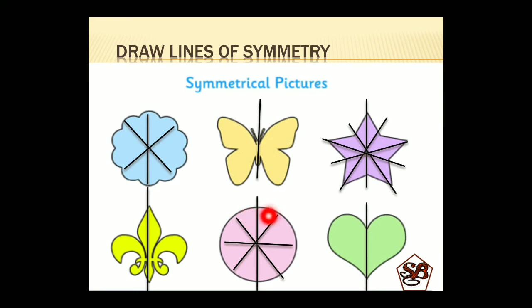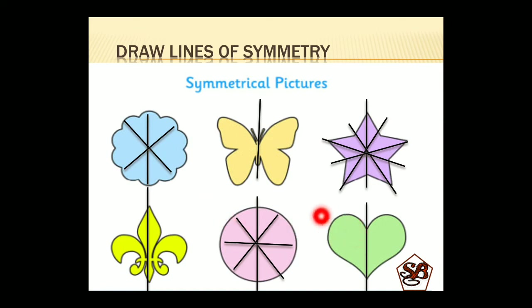For example, if we take a round clock, that will also have infinite lines of symmetry. Similarly, this shape is also a kind of circular shape, so it can have many more lines of symmetry — one horizontal or other ways also. Coming to the last figure, it is a heart shape, which has only one line of symmetry.